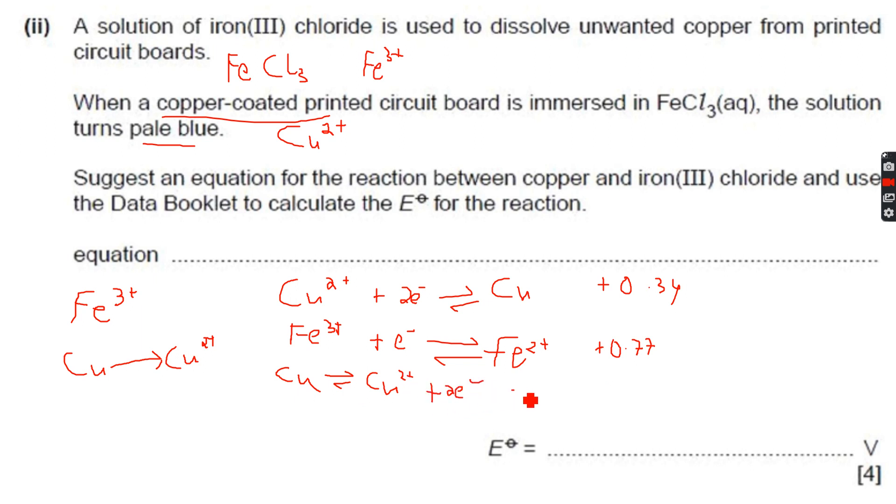So we will have Cu gives Cu2+ plus 2e-, and now that we've inverted it, the value becomes -0.34. Now we will add -0.34 and 0.77 just like we did in the previous example.